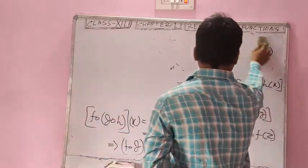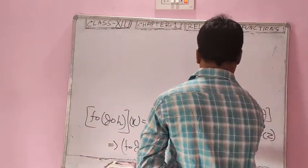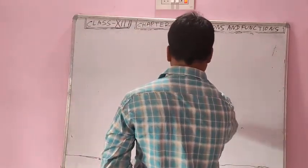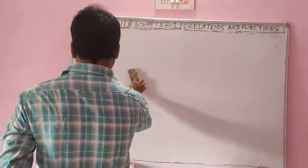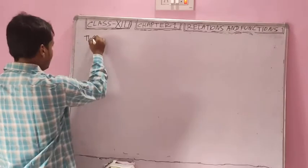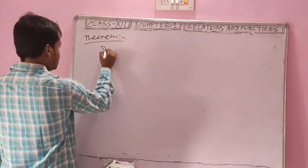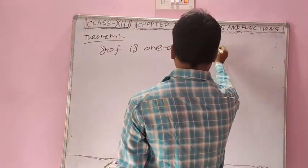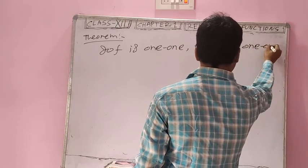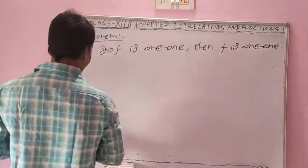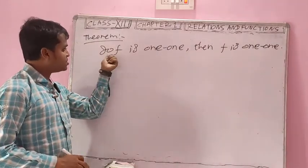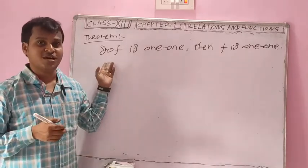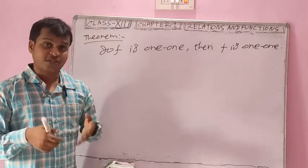We have to prove some other very important property of composition functions. The theorem is: if g∘f is one-one, then f is one-one. If the composition g∘f is one-one, then the second function f is always one-one. The first function g may or may not be one-one. After the proof I will give an example.